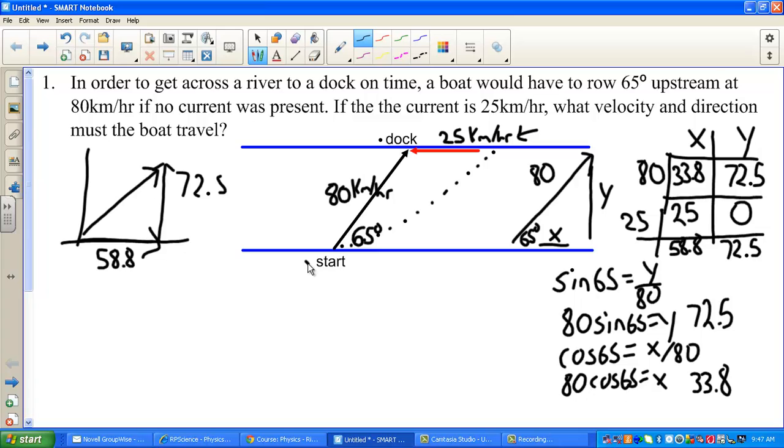So now we're just going to use Pythagorean Theorem. C squared equals 58.8 squared plus 72.5 squared. I take the square root of each of that. So now we're going to punch that in the calculator. That comes out to be 93.4 kilometers per hour. That's the first part of my answer.